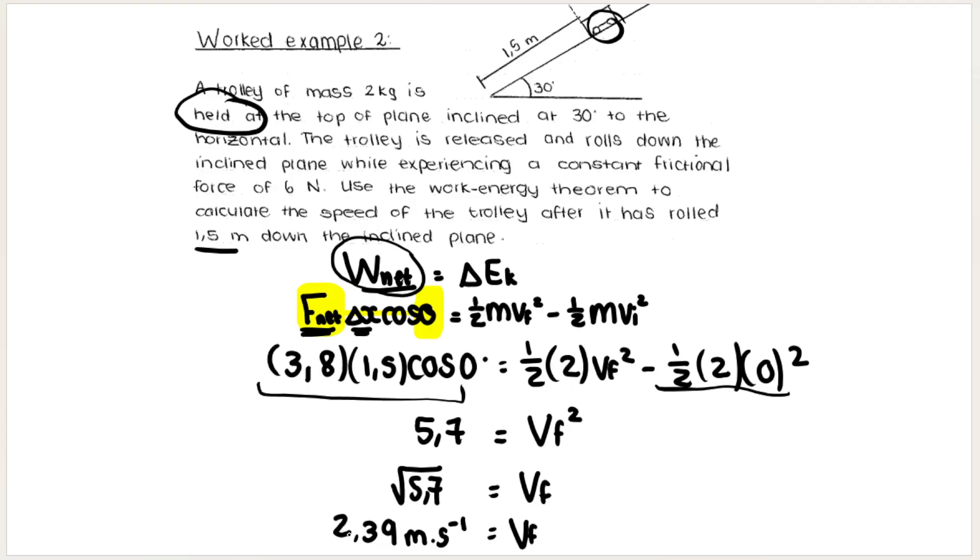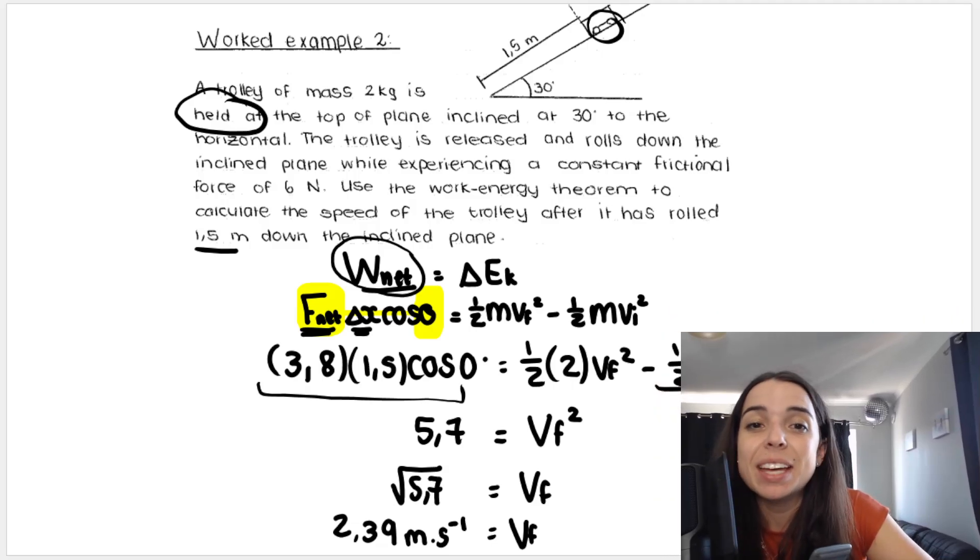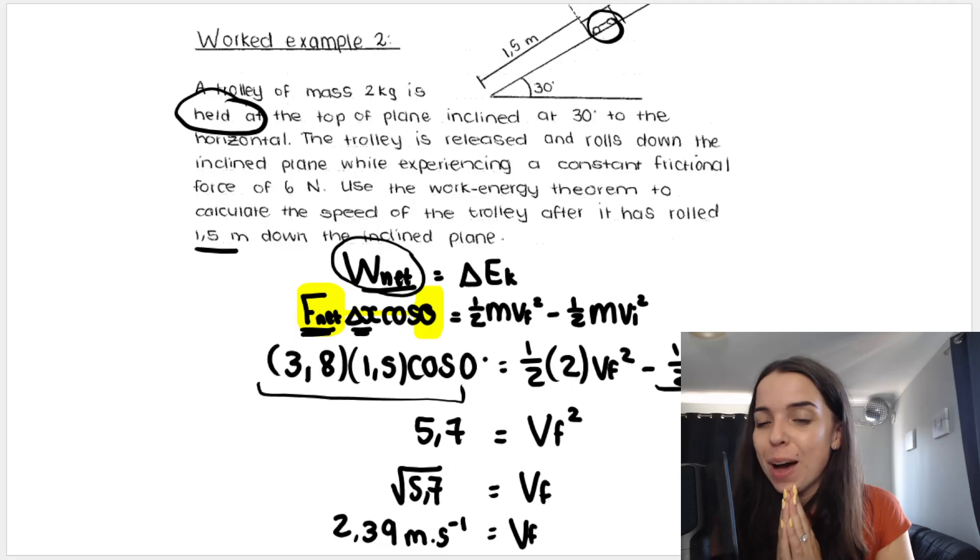And I get 2.39 meters per second calculating velocity, or actually speed, so I don't need a direction. I hope that was helpful. Check out the links below for more work energy power videos. I'll see you in another one very soon everyone, bye.